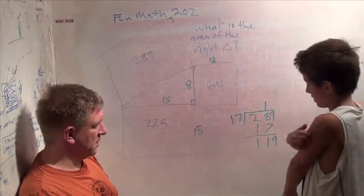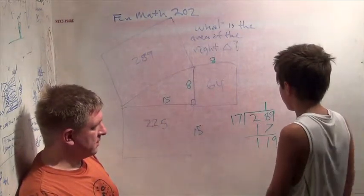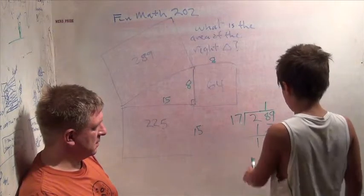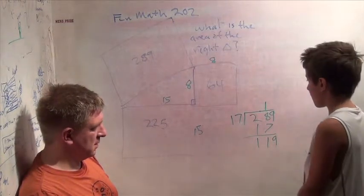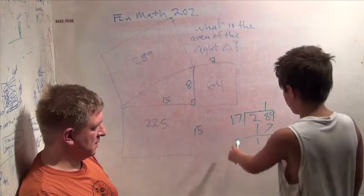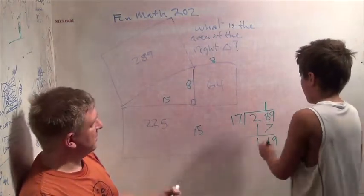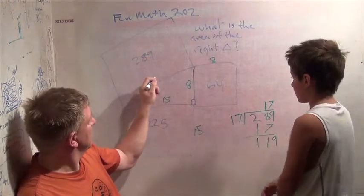119. Okay. So 17 times 9 work. 90 plus 63 now. So 17 times 7. 70, 49. Okay, that works. Aha. So this is 17.